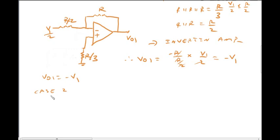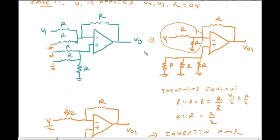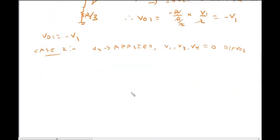In Case 2, we apply V2 while grounding V1, V3, and V4. By the same inverting amplifier analysis, the output voltage V02 equals minus V2.